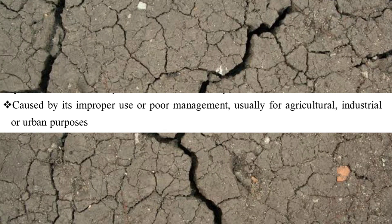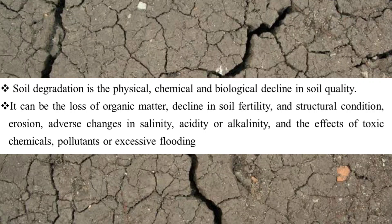Soil degradation is caused by improper use or poor management of soil, usually for agriculture, industrial, or urban purposes. It can manifest as loss of organic matter, decline in soil fertility, structural changes, soil erosion, changes in salinity, acidity or alkalinity, and the effect of toxic chemicals, pollutants, or excessive flooding.